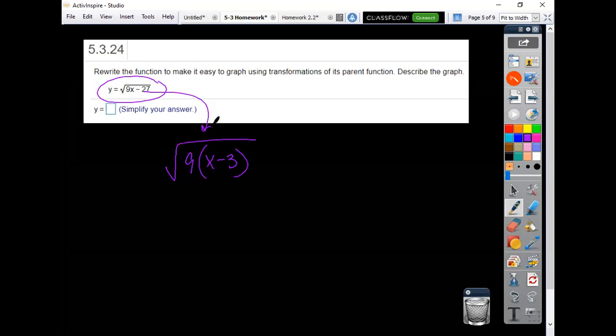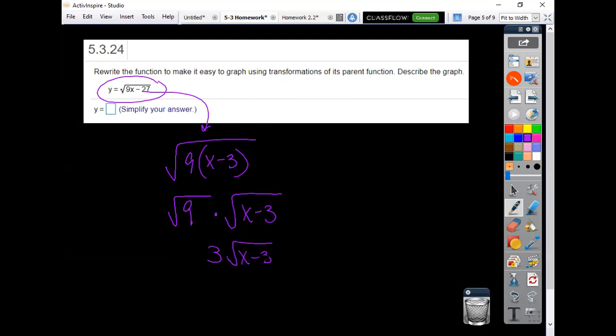Right, 9 times x would be 9x, and then you can use your product rule if you want to separate it out. So then the square root of 9 is 3, that's a vertical stretch.